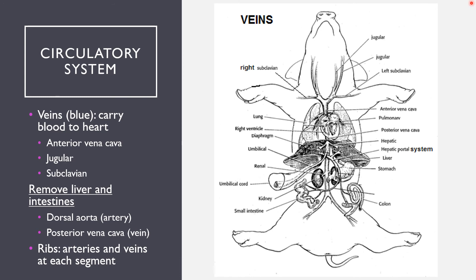Veins are always dyed blue so you can differentiate them — arteries are transporting oxygenated blood, hence why they're red, whereas veins lack oxygen and are dyed blue instead. Once blood has flowed throughout the body, it returns to the lungs through the pulmonary artery and then enters back into the heart through the left atrium. From there it travels through the left ventricle, back into the aorta, and into the rest of the body.